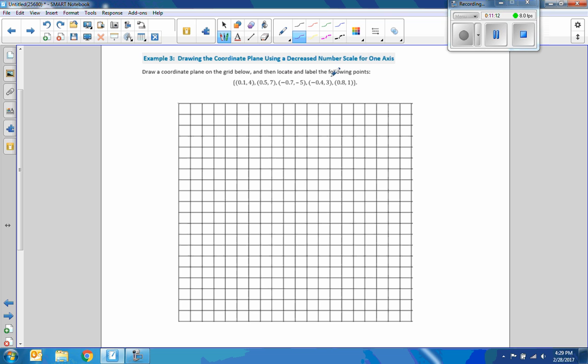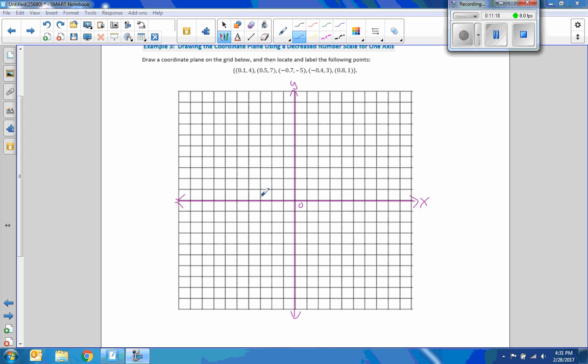Here's another one. Draw coordinate plane on the grid below. Locate and label the following points. To save time here, I'm going to pause the video and make my grid first. So here's my grid. Nice straight lines. Arrows at the end of all of these. Y axis labeled. X axis labeled. Origin. Now I need to look at my scale. 0.1, 0.5, negative 0.7, 0.4, 0.8. Largest number is 0.8. So rather than call this 1 and squeeze everything in between 0 and 1, that'd be impossible. It'd be crazy. It wouldn't be accurate.